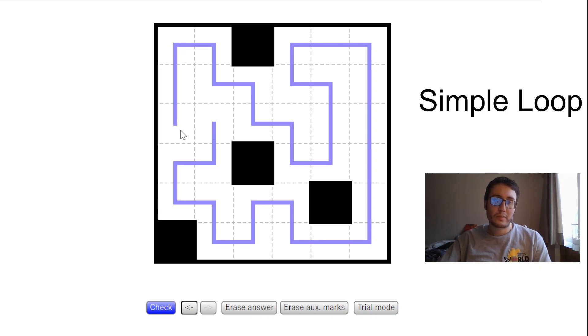So this is a loop, but for example, this is not a loop because it has two distinct endpoints. So this won't be a correct solution. Another rule is that you have to go through all the empty cells. So if this wasn't a rule, for example, this would be a solution, this would be another solution. There would be a lot of solutions. So you'll have to go through all the empty cells.